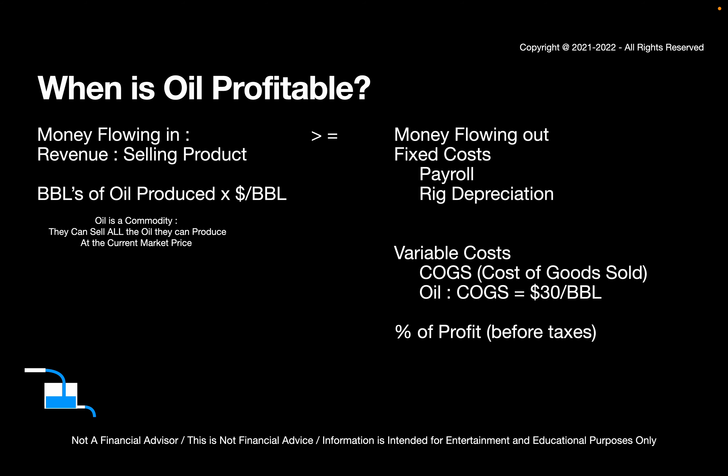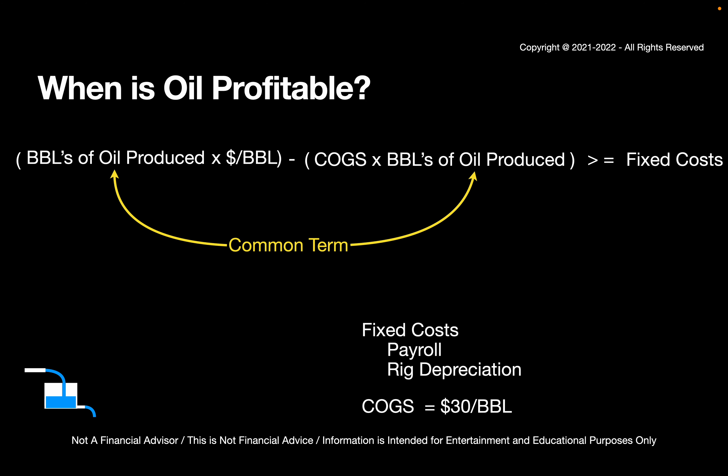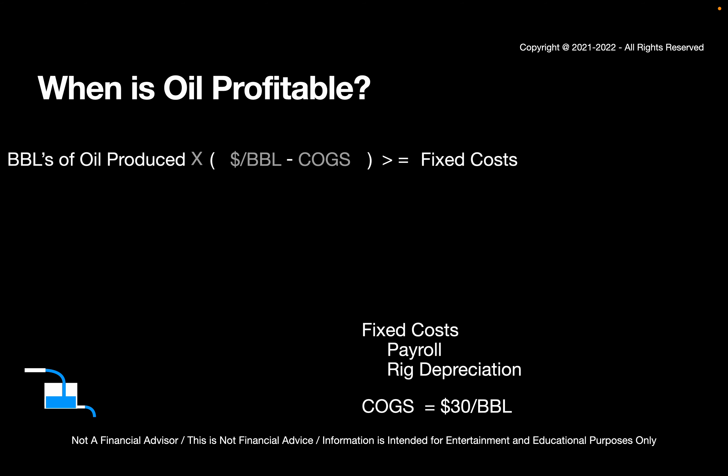So the question comes up: when is oil profitable? It's when the money flowing in is greater than the money flowing out. We make an equation: revenue — barrels of oil you're producing times the dollars per barrel — has to be greater than your fixed costs plus the COGS cost times the number of barrels you're producing. We can do some quick algebra and move the COGS cost to the left-hand side. We get a common term — barrels of oil being produced — so we simplify: barrels of oil times (price of oil minus COGS cost) has to be greater than fixed costs. That's when oil is profitable.